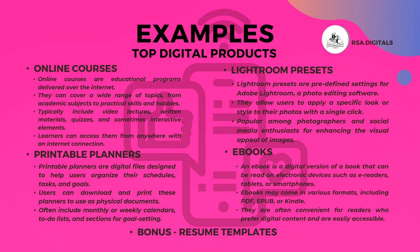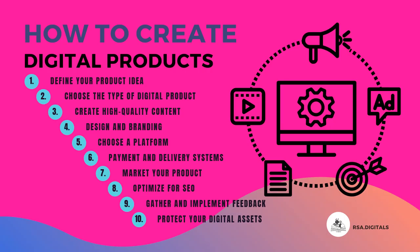To create digital products: first, define your product idea — identify a niche or problem your digital product can address to ensure there's a demand. Second, choose your digital product type based on your expertise and audience needs — options include ebooks, online courses, printables, presets, and more. Third, develop high-quality content, which may involve creating written content, designing visuals, recording videos, or curating resources. Fourth, ensure a visually appealing design and consistent branding that resonates with your target audience to enhance the overall user experience.